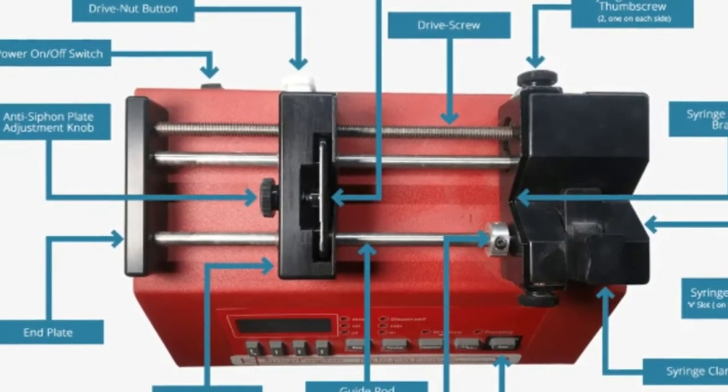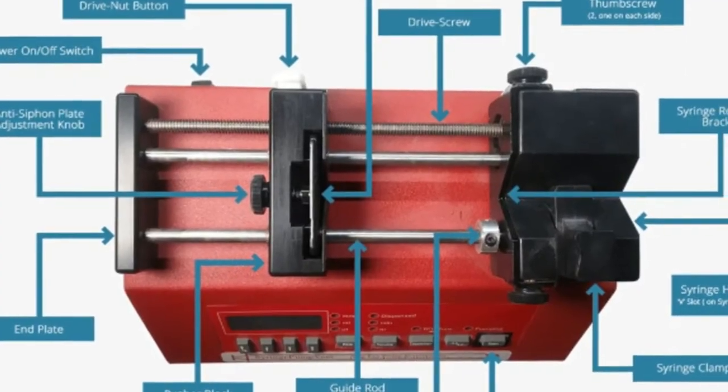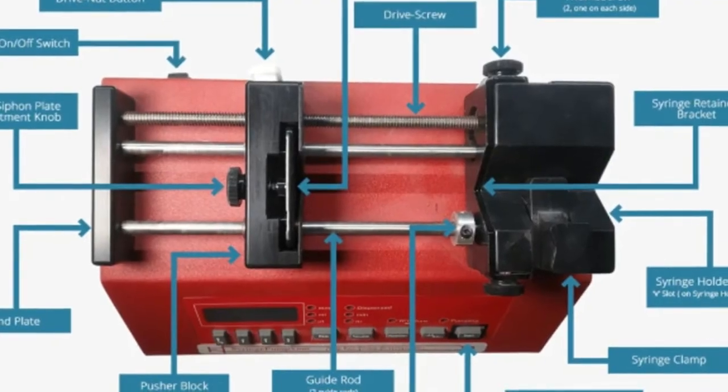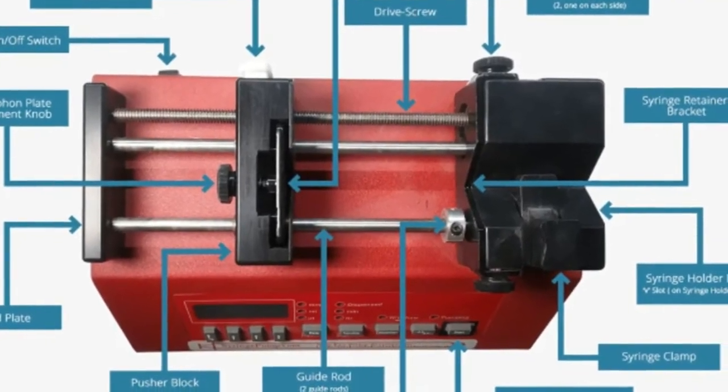The eleventh component is the anti-siphon plate which prevents siphoning from a syringe. If a syringe is under vacuum pressure, its plunger would tend to be withdrawn if it wasn't secured by the anti-siphon plate.